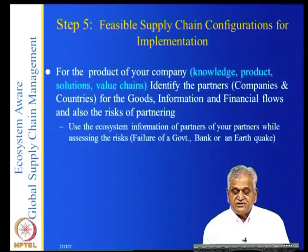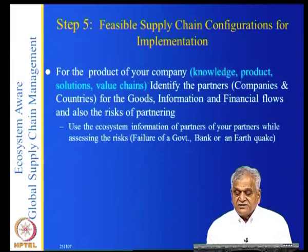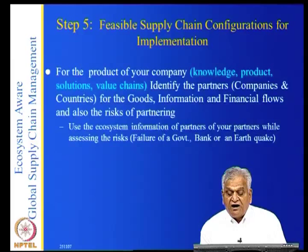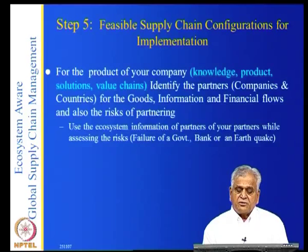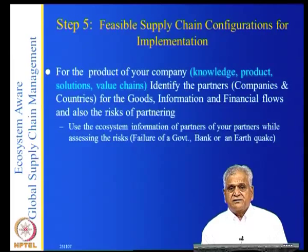Use the ecosystem information of your partners while addressing risk. In other words, you should do multi-tier risk management. Multi-tier risk management means you should not only know about your suppliers but also their suppliers, and their suppliers' suppliers, going all the way up to the mines. This could involve failures of the government, a bank, or an earthquake, and so on. There could be any kind of problems, so you should use the ecosystem information of this map.